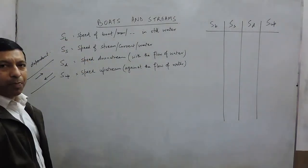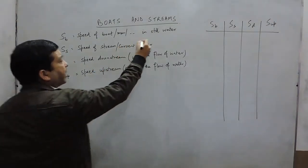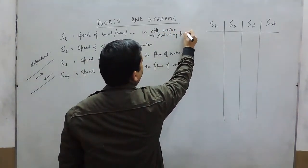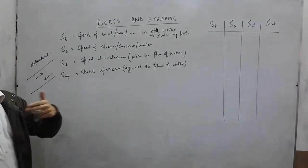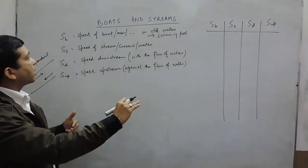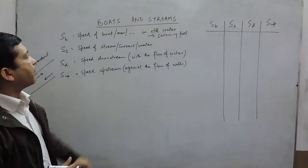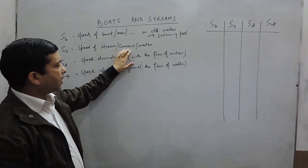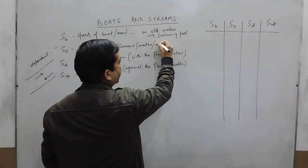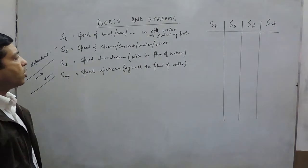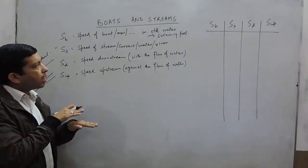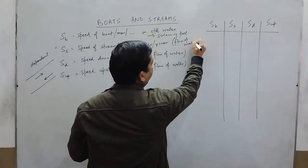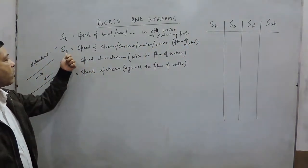The first is SB — the speed of the boat in still water. Still water refers to something like a swimming pool, where only the speed of the boat or swimmer matters. The second is SS — the speed of stream. This can also be called current, water, or river. It is the speed of the flow of water.